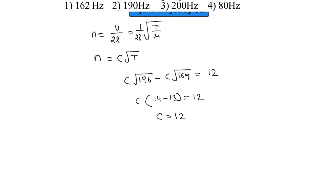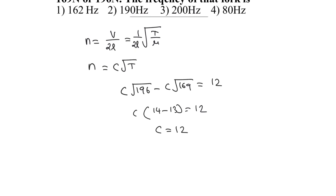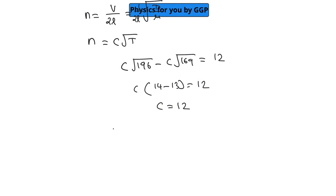Once we have the value of c, we can find the frequency using n = c√T. For the higher tension T = 196, we get n = 12 × 14 = 168 Hz.